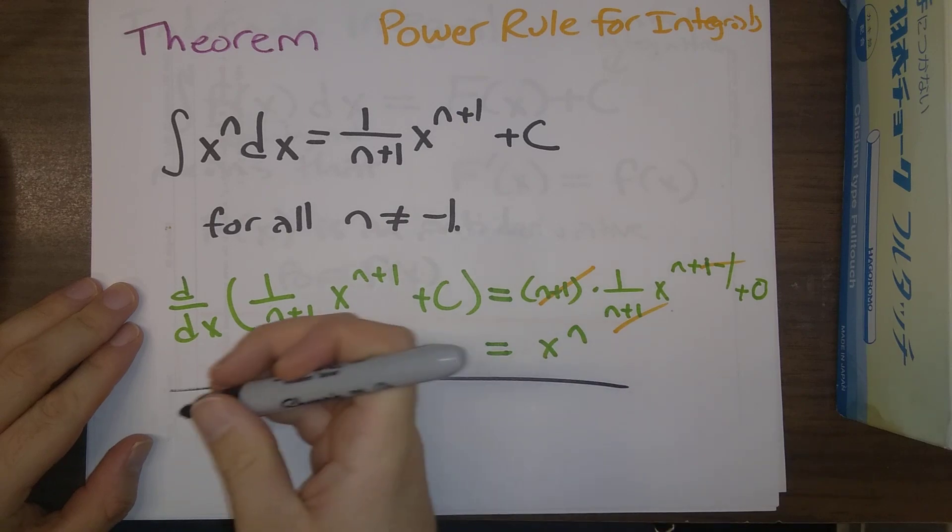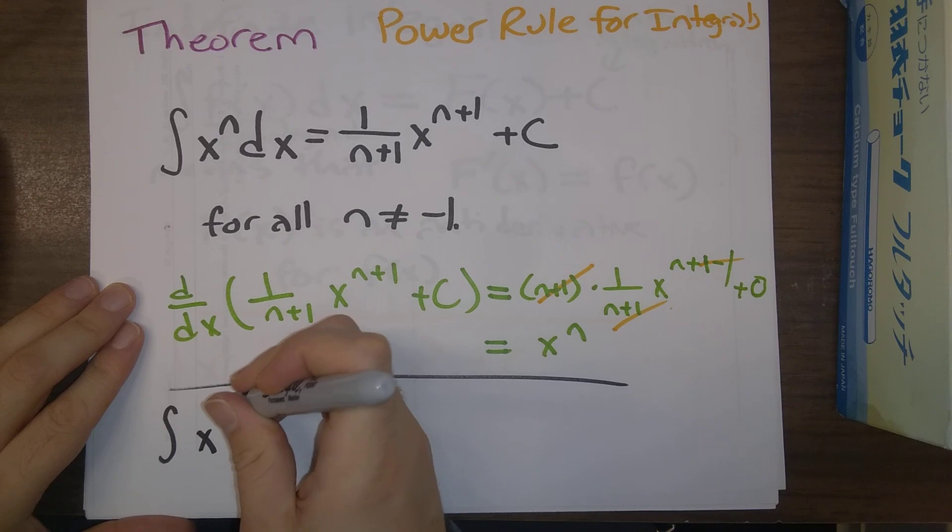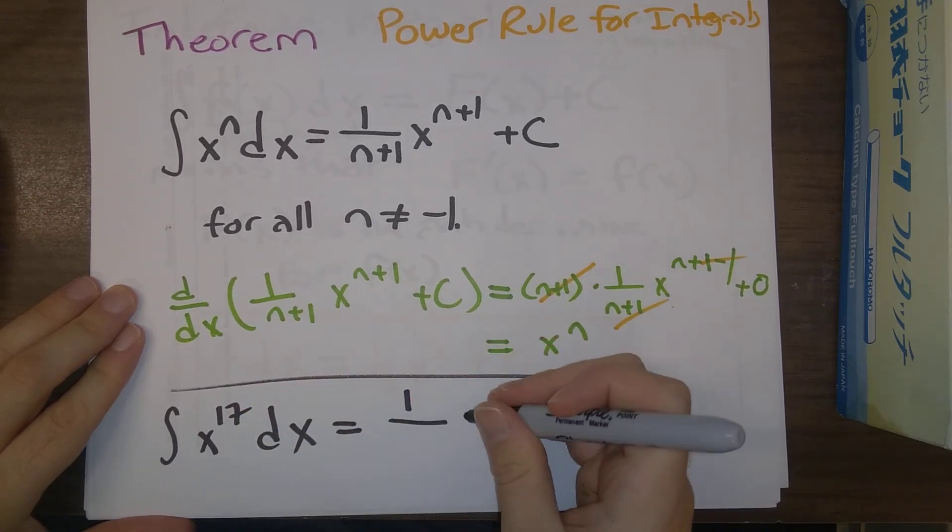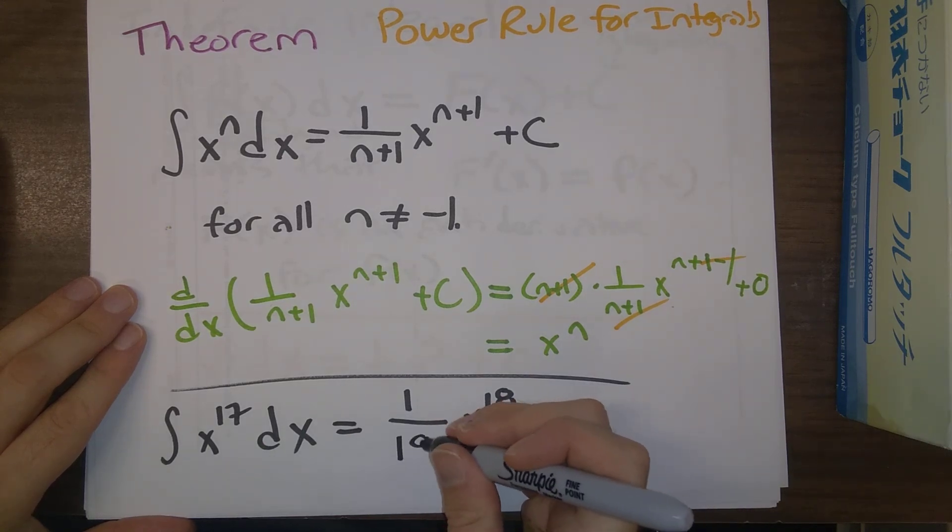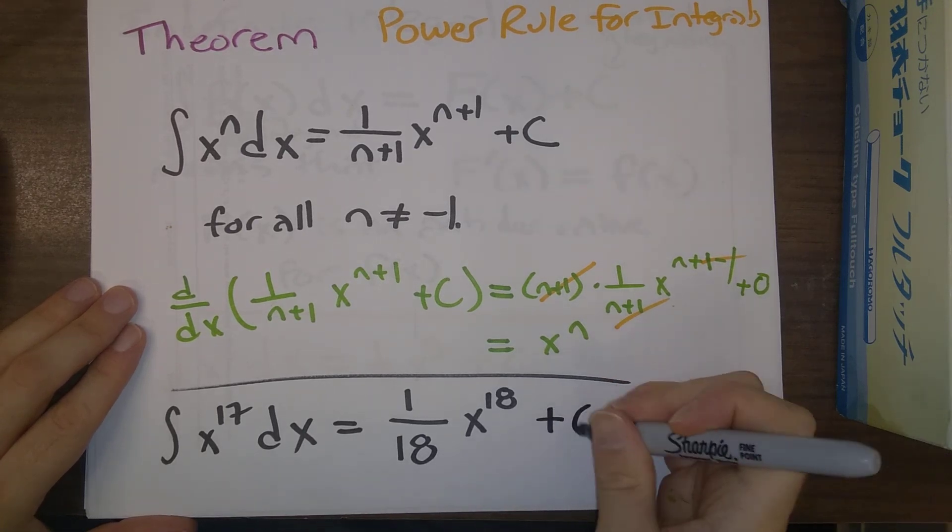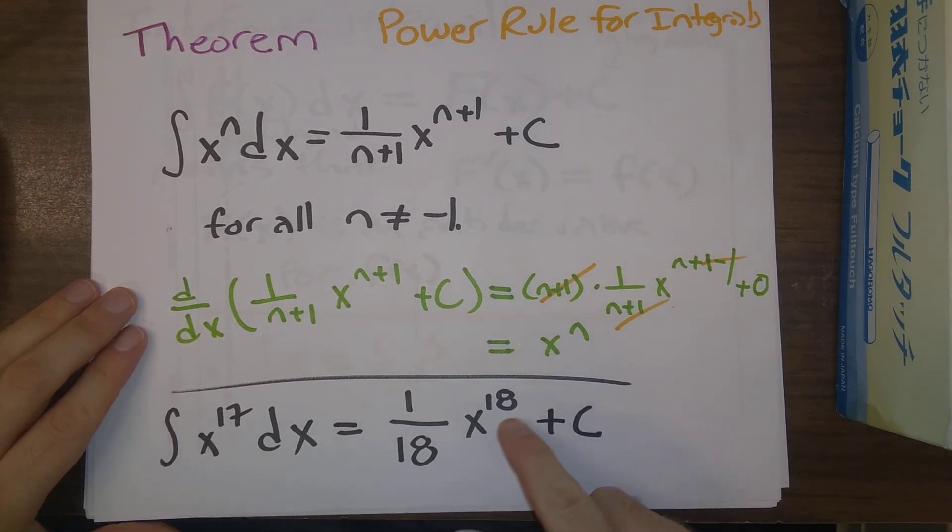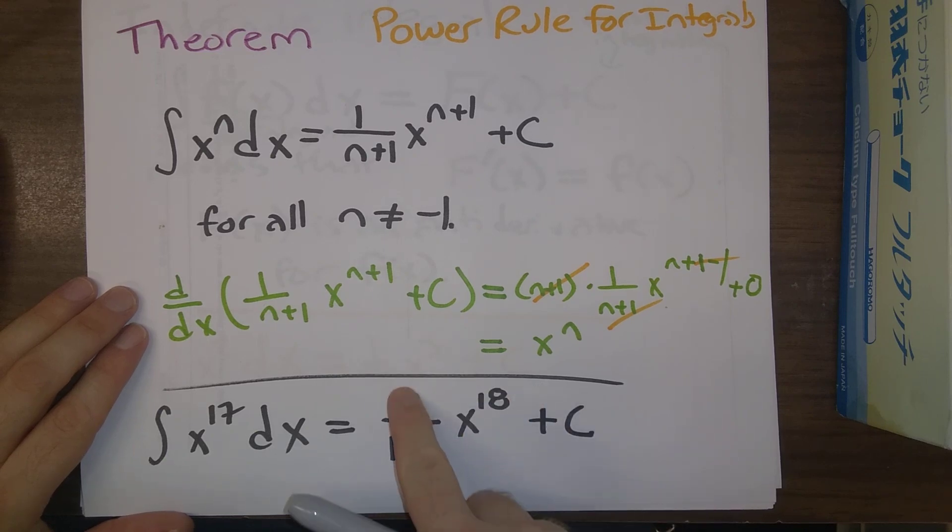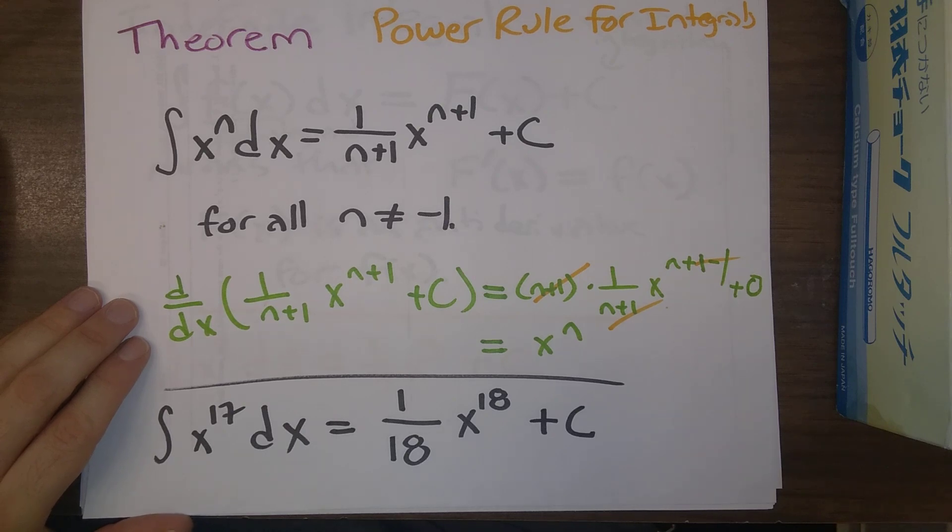So as a quick example of that, what's the indefinite integral of x to the 17th dx? Well, we increase the exponent by 1, x to the 17th goes to x to the 18th. We divide by the new exponent, we divide by 18, plus a constant. And we can check here that if we take the derivative of this, we bring down the 18, those cancel, and we're just left with x to the 17th, which is what we started with.